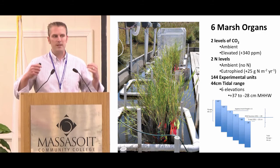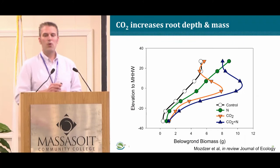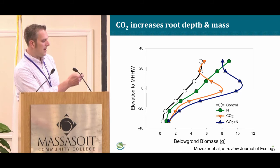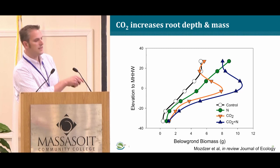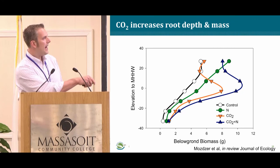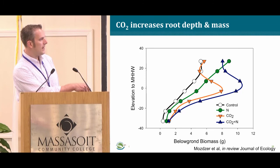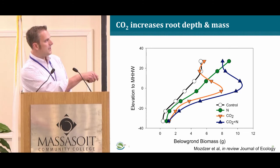What I really want to focus on is what's happening below ground, because we know below ground processes are really driving carbon sequestration as well as surface elevation gain. The coolest result from this experiment — which spearheaded a whole new line of research — is what happens below ground with elevated CO2. Looking at elevation relative to mean high high water versus below-ground biomass with Phragmites only, we found that elevated CO2 caused a profound shift of roots going deeper.